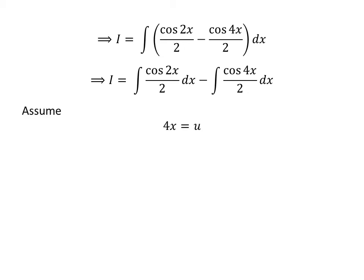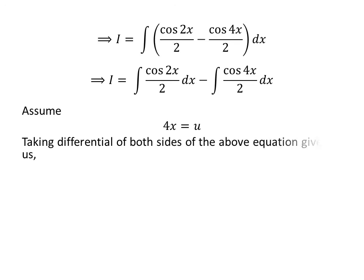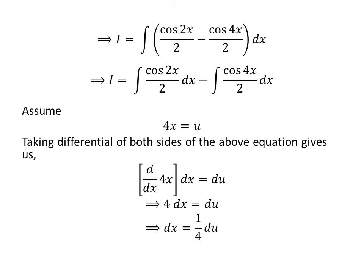Let us solve the integral of cosine of 4x upon 2 with respect to x. I have applied the substitution method to solve this integral. Let us assume 4 times x is equal to u. Differentiating both sides gives us the derivative of 4x with respect to x times differential of x equals differential of u. As the derivative of 4x is 4, so 4 times differential of x equals differential of u.